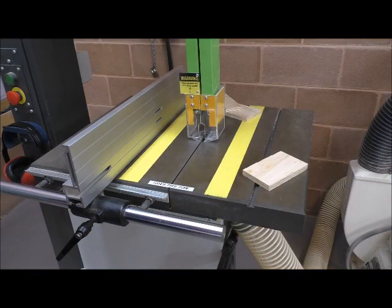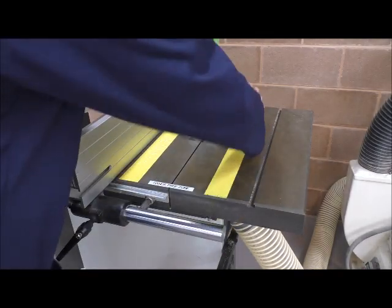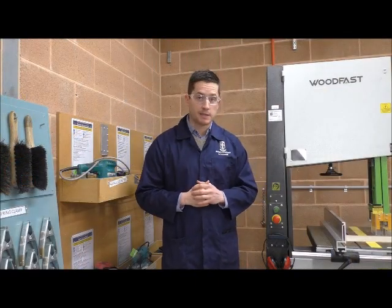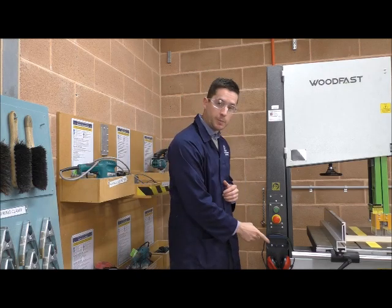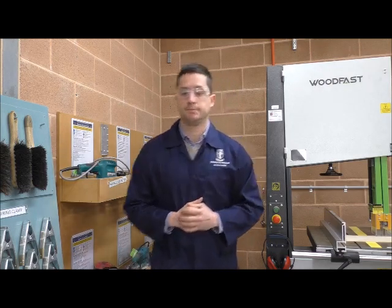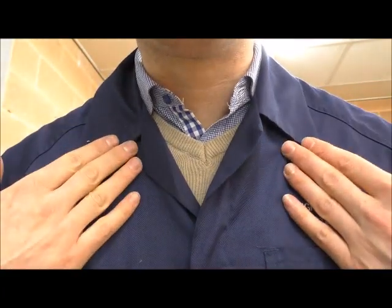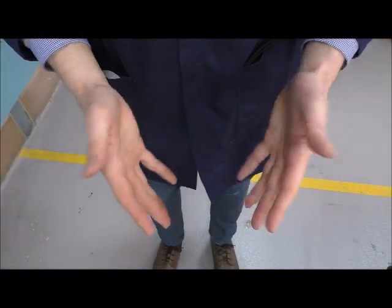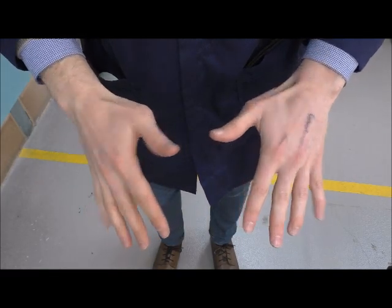Before you begin work on the band saw, ensure that all debris is removed from the table. Ensure you have on your safety glasses and make sure you have access to hearing protection. Ensure you have on no tie or jewelry that may get caught in the machine. No rings, watches, or jewelry are to be worn.